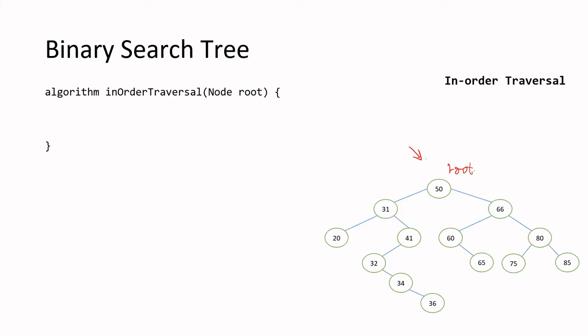Before we start, let me remind you: this is a tree structure. Before you attempt an iterative solution, it's better to always start thinking whether a recursive solution would work. Given a tree data structure, recursion typically works better. That's the first thing. Second, you're given the root — when you apply in-order traversal to the root, it will also be applied to other nodes through recursion.